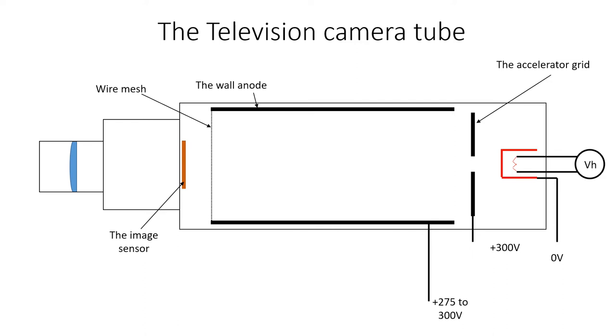A coil was wound around the tube and a current passed through it. When an electric current is passed through a coil, it creates a magnetic field. The magnetic field runs along the axis of the tube. The electrons are negatively charged and are attracted towards the accelerator grid and pass through the hole. They are then attracted by the wall anode and pass through the wire mesh to strike the image sensor. By adjusting the magnetic field caused by the focus coil, the electron beam is focused to a small spot by the time it arrives at the image sensor.